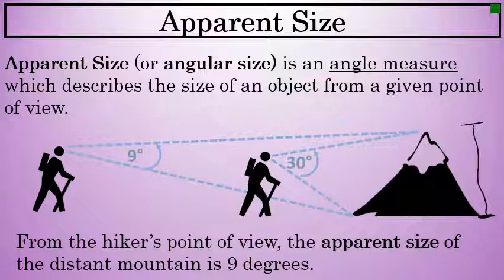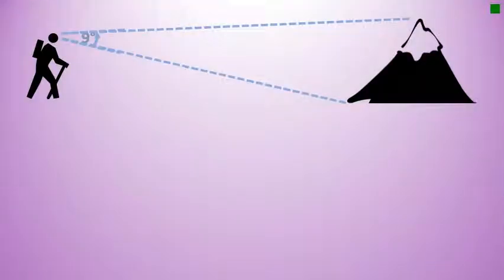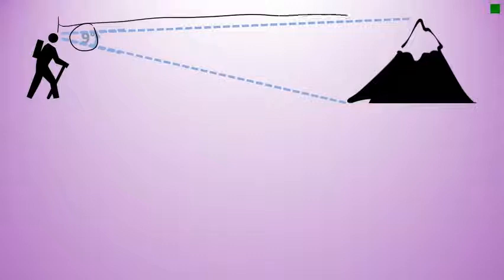In this video, I will talk about how to approximate the actual size of distant objects when the apparent size is known. When the apparent size of a distant object is known, you can approximate the actual size of that object if you also know the distance from the observer to that object.